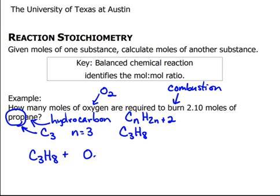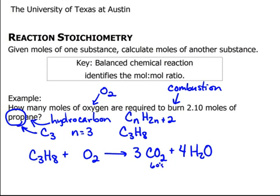Now I need to balance it. I like to save the oxygens for last — so carbons first, then hydrogens, then oxygens. I see I have 6 oxygens from the CO2's and 4 oxygens using the distributive property — that's 10 on the right, so I need 10 on the left. Five O2's will give me 10. Now I have a balanced chemical equation. That's key to solving this problem.